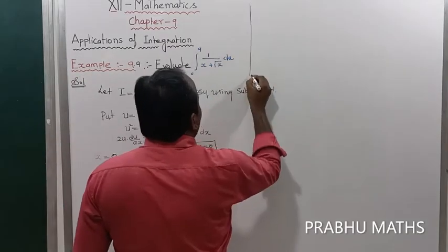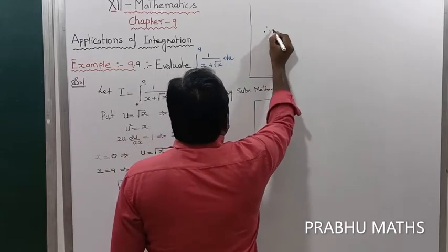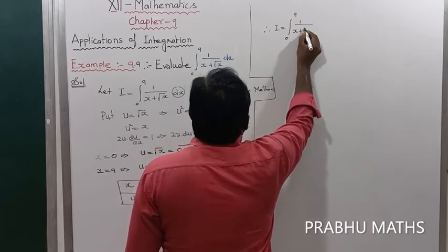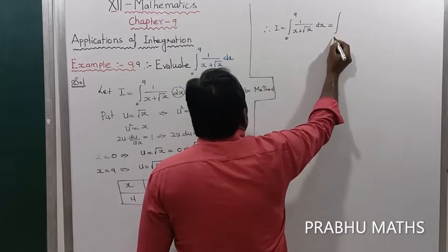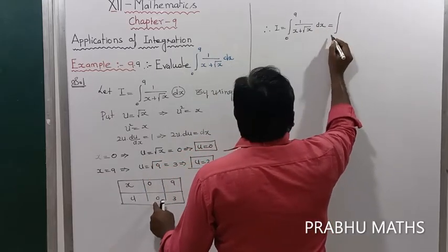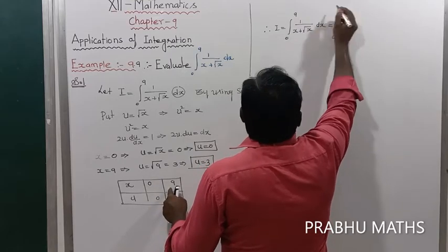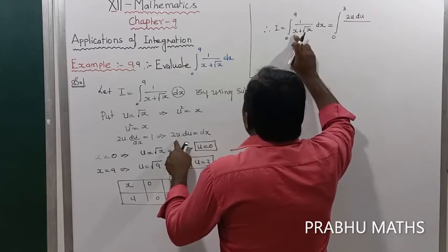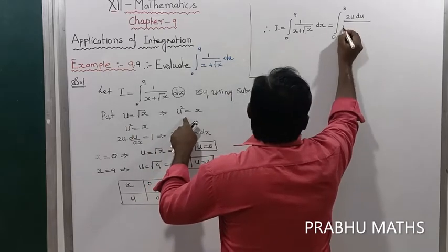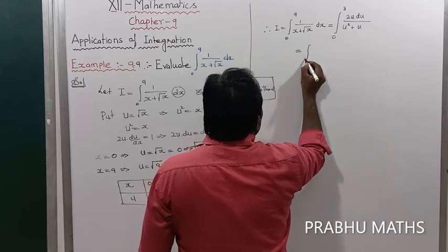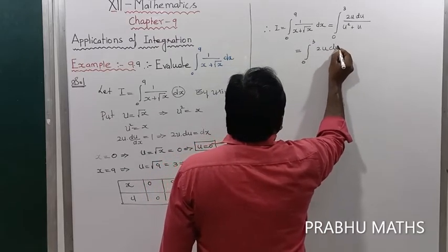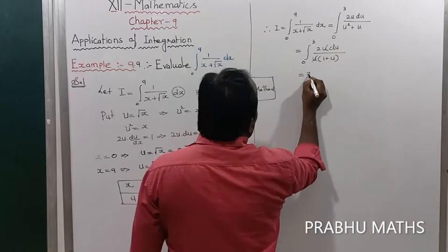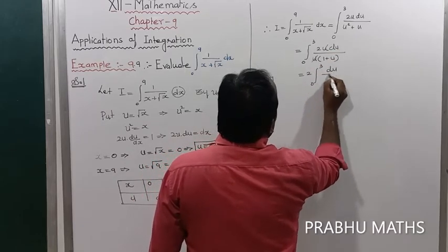Now replace the values in the integration. Therefore, I equals the integral from 0 to 9 of 1 divided by (x plus root x) dx, which becomes the integral from 0 to 3 of 2u du divided by (u squared plus u). Taking u common from the denominator gives u(1 plus u), so the u's cancel, giving 2 times the integral from 0 to 3 of du divided by (1 plus u).